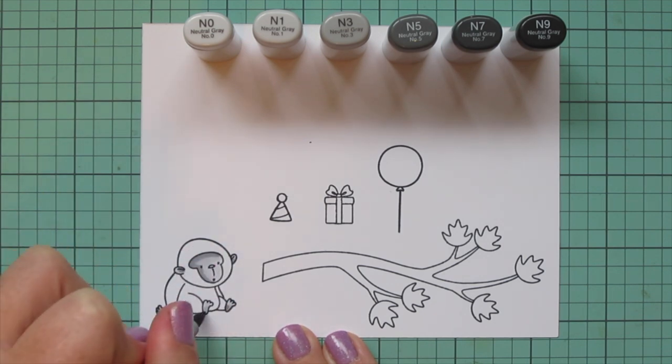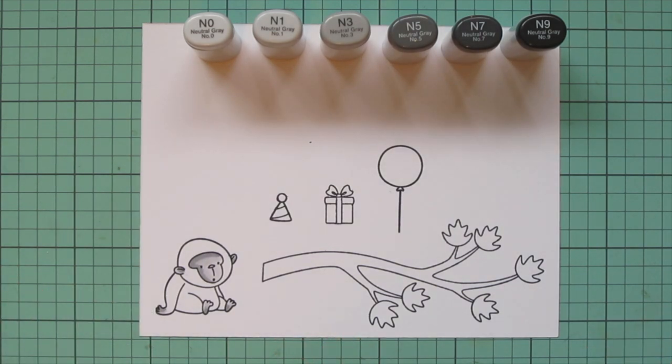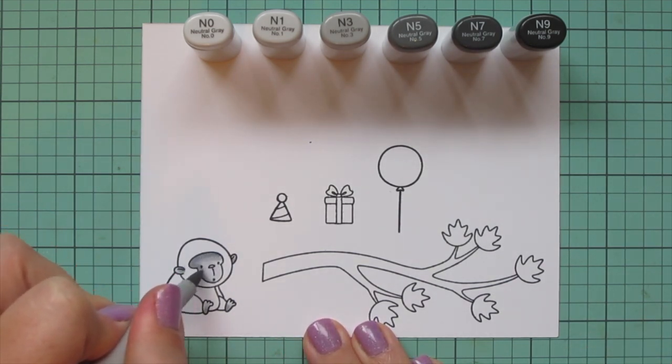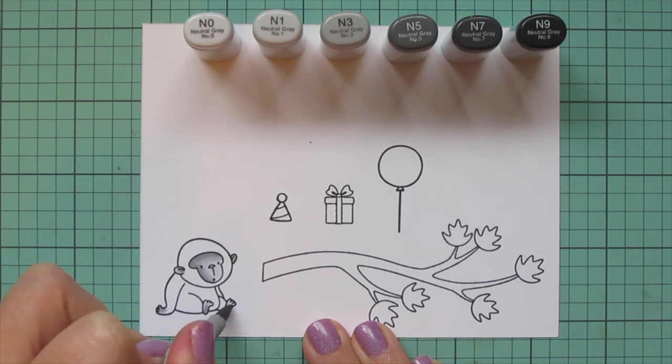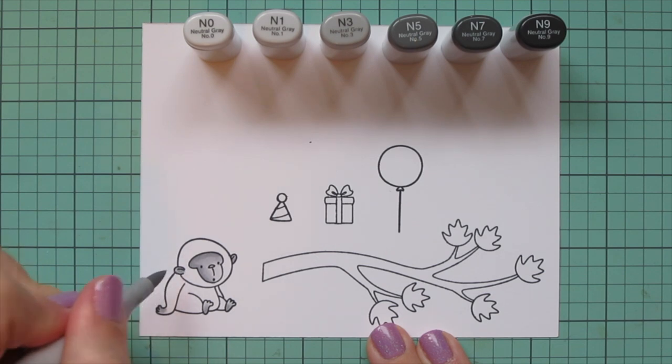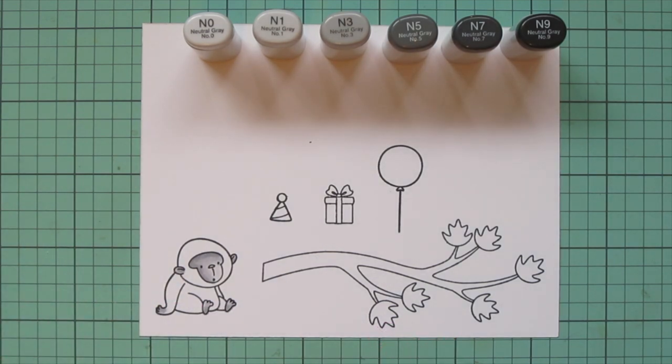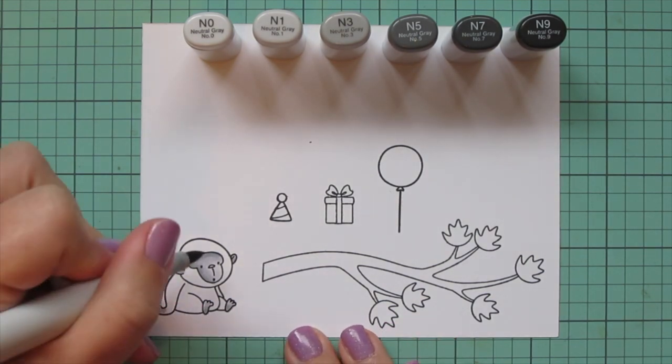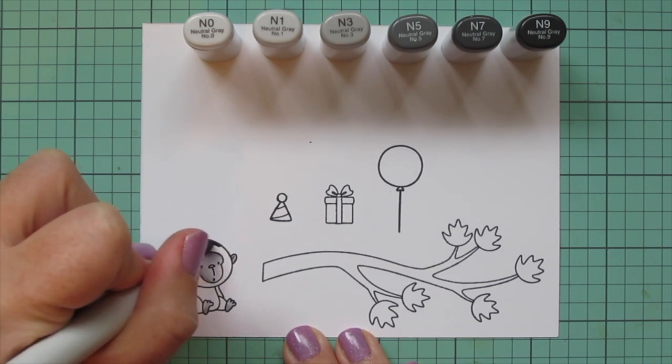Just coloring directly over the same areas that I placed each color before with the exception of the lightest shade. A lot of times with the lightest shade I won't cover the entire image and that way I almost get a fourth shade out of there where there's just the one layer of the lightest color.